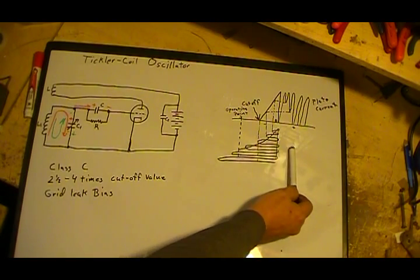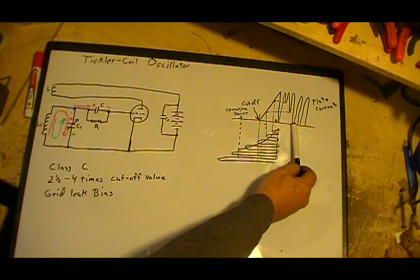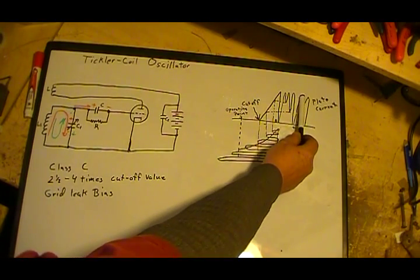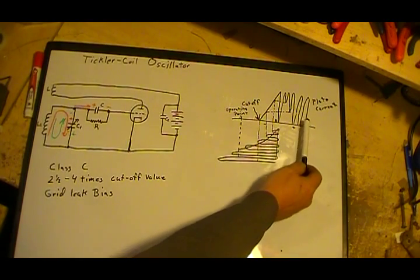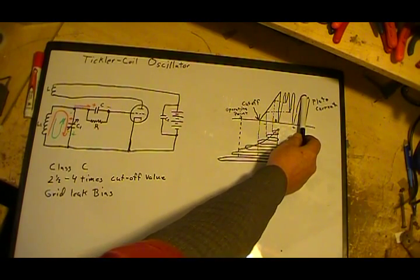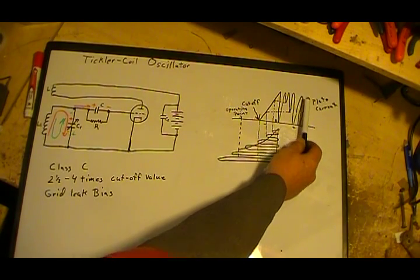So the grid goes positive for just a very short little time. When it swings over that way, that gives the maximum amount. Once it gets past cutoff, we start flowing current in our plate. This comes clear over far enough that we get current to near, but not past, but near saturation.